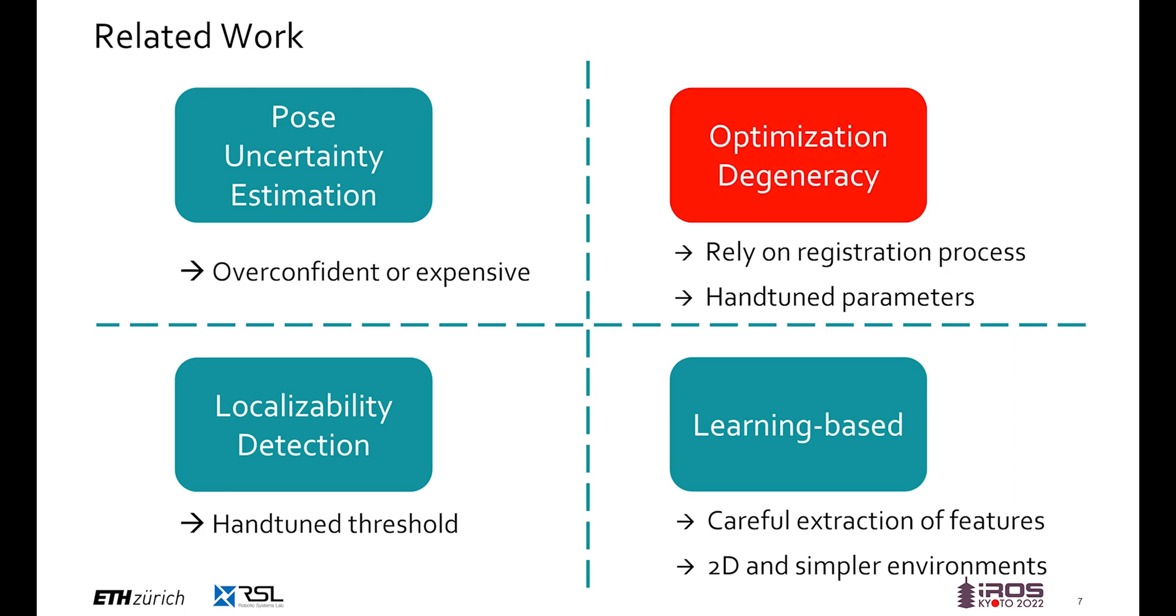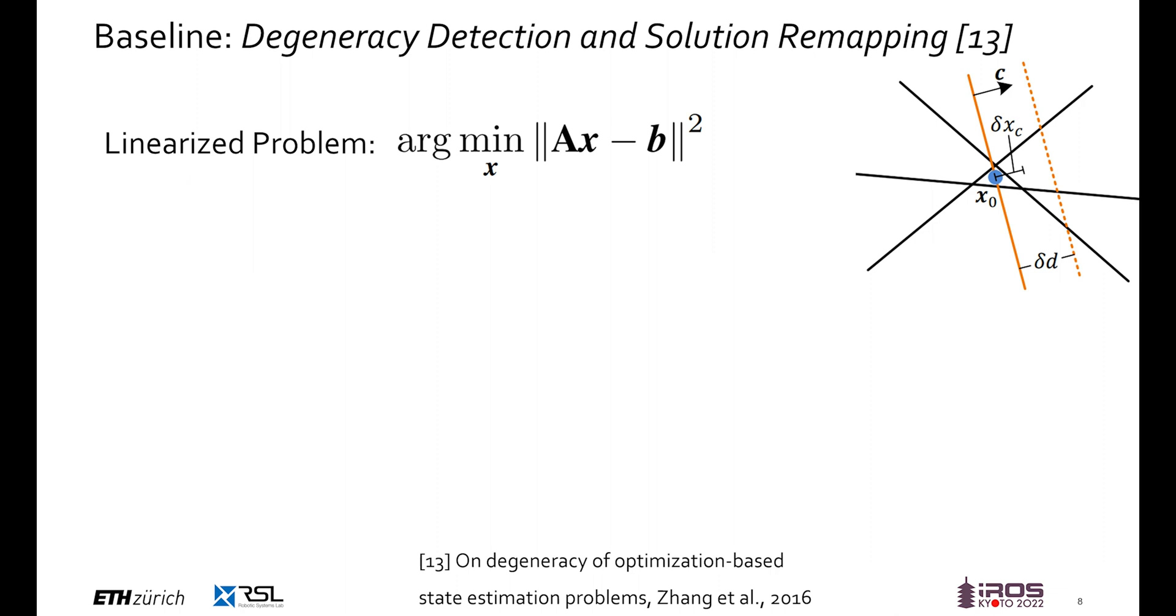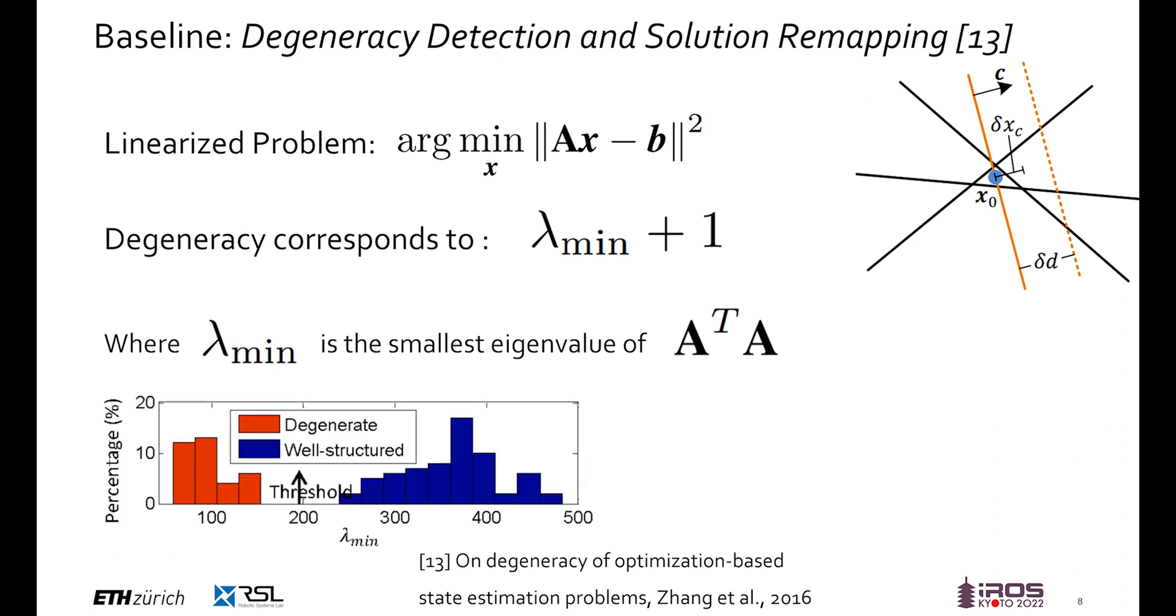In one of the most common works in this domain, the optimization degeneracy of a linearized least square problem is investigated. The defined degeneracy is shown to correspond to the smallest eigenvalue of the Hessian of the linearized optimization problem. Whether an environment is degenerate or not is then decided based on a threshold, which can be problematic in practice, as we will also show in this presentation.